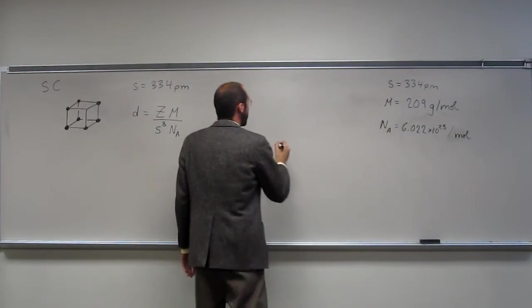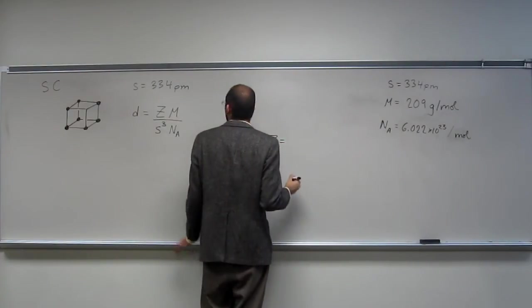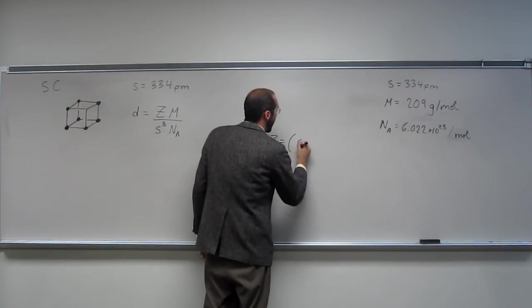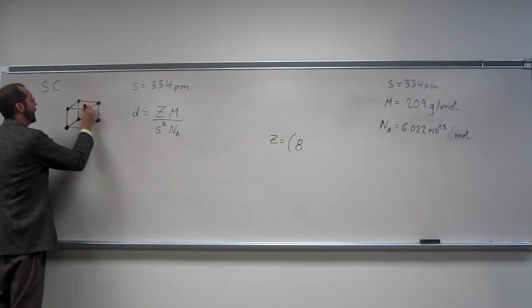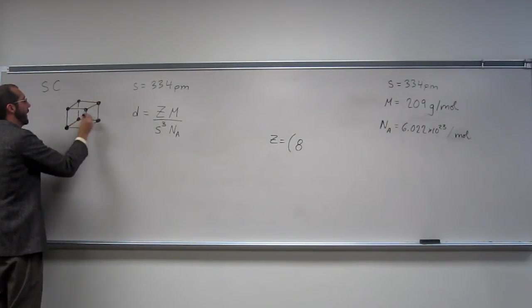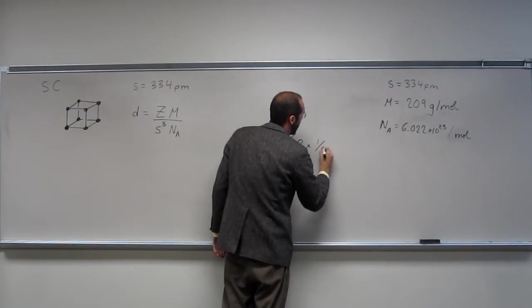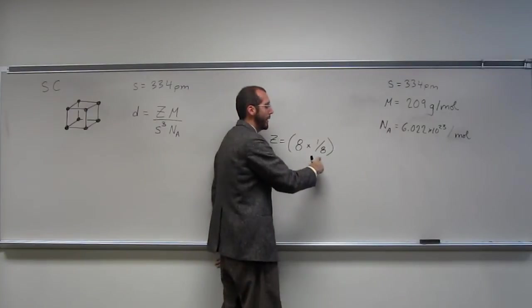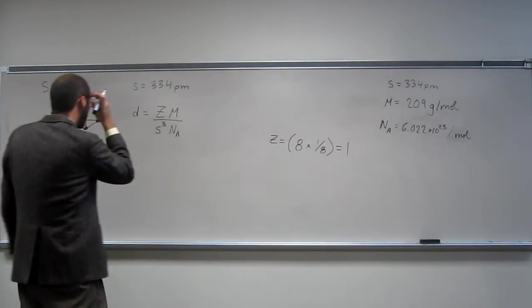And Z, well, what did we say that was? The number of lattice points per unit cell. So, the simple cubic, right? It's eight of them, because we've got one, two, three, four, five, six, seven, eight, times one eighth, because only one eighth of each one of those atoms is in the unit cell. So, that equals one.